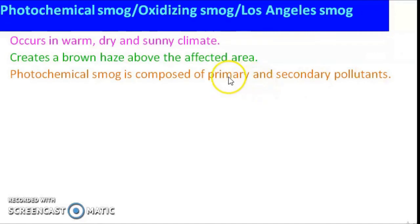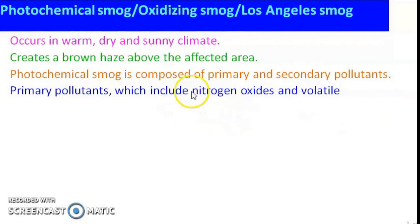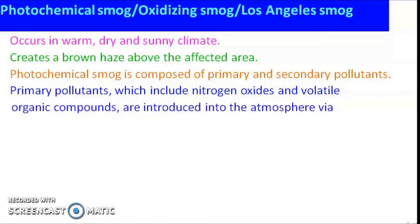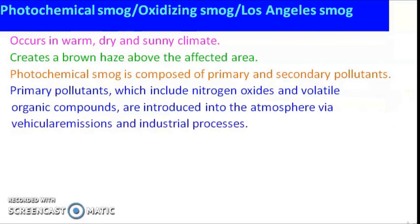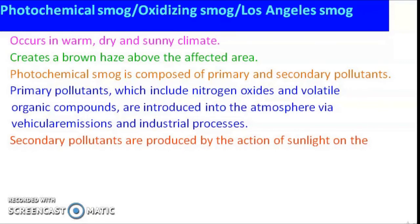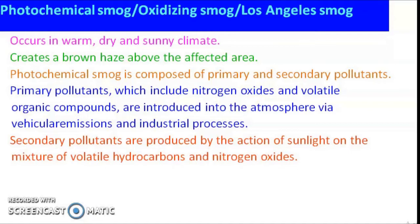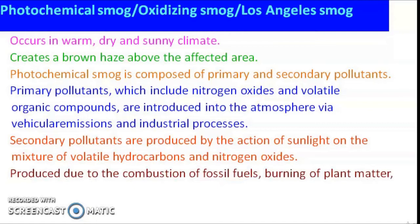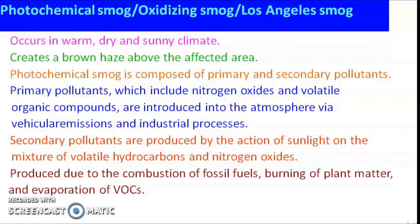It is composed of both primary and secondary pollutants. The primary pollutants include oxides of nitrogen and volatile organic compounds (VOCs), introduced via vehicular emissions and industrial processes. It is the oxides of nitrogen which gives the brown haze appearance above the affected area. These pollutants are produced due to the combustion of fossil fuels, burning of plant matter, and evaporation of VOCs from household materials like paint, perfumes, body sprays, air conditioners, etc.